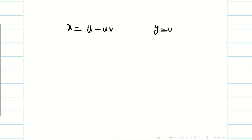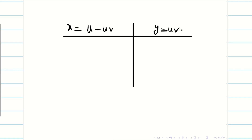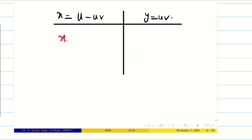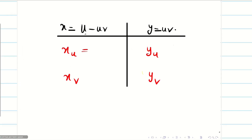Let us go into the problem. x = u(1 - v) = u - uv, and y = uv. Now we compute the partial derivatives: x_u, x_v, y_u, y_v. x_u is the partial differentiation of x with respect to u, giving 1 - v. x_v is -u, since the first term doesn't contain v. Similarly, y_u = v and y_v = u.